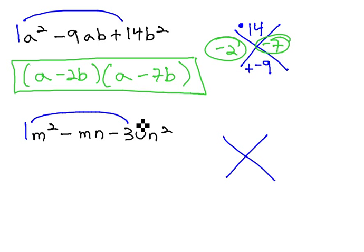Using the AC method, 1 times negative 30 is negative 30, and the middle number is negative 1. One way to multiply to 30 is 3 times 10, but that won't give us the negative 1. 2 times 15 won't work either, because they won't give us negative 1.